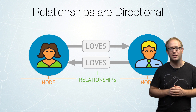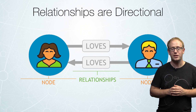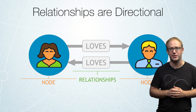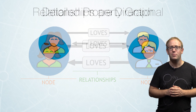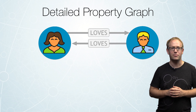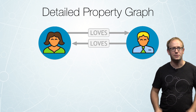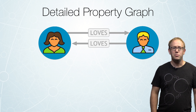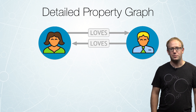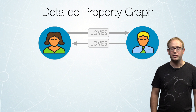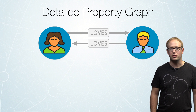We'll talk later about the case where relationships are always bidirectional. But first, let's give you a little bit more information about the property graph. The property graph is named as such because it allows you to store properties along with your nodes and relationships.